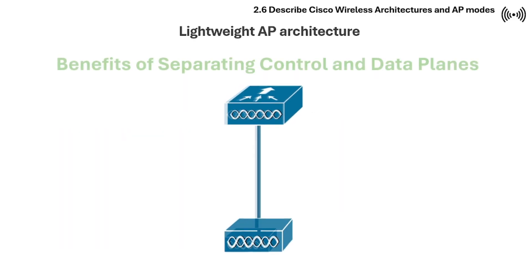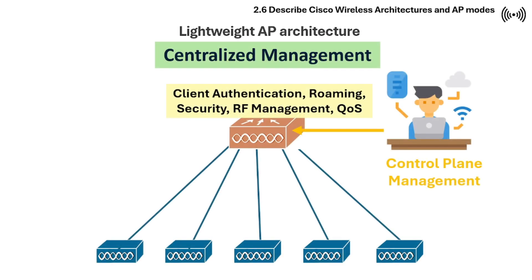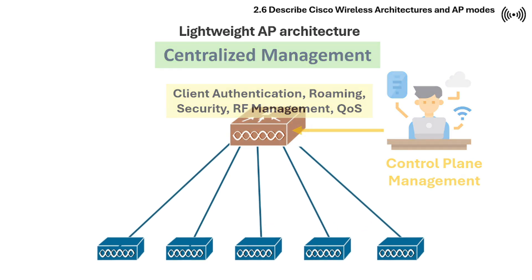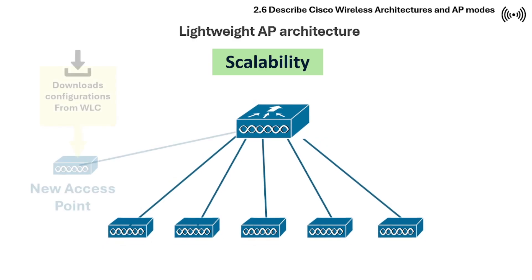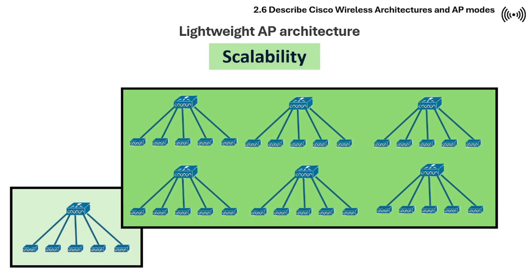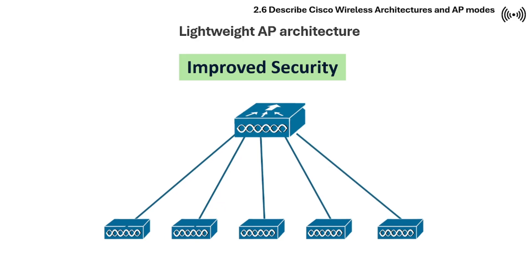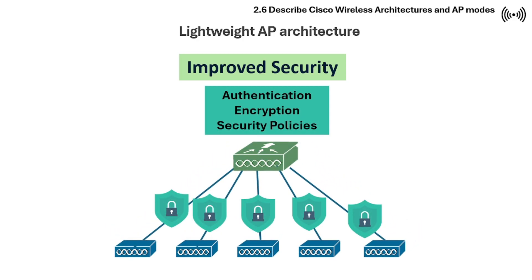Here are the benefits of separating control and data planes. First, instead of configuring each AP individually, network admins can manage multiple APs through a single WLC, simplifying configuration and troubleshooting. Next is scalability — any new lightweight AP automatically connects to the WLC and starts operating without manual setup, making large-scale deployments much faster and more efficient. Another benefit is improved security, as the controller enforces security policies including authentication, encryption, and rogue AP detection, ensuring consistent security across the entire wireless network.